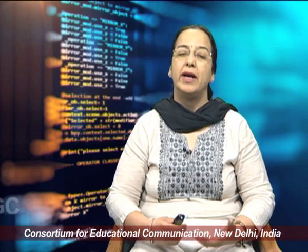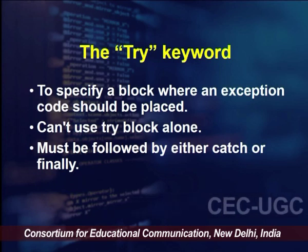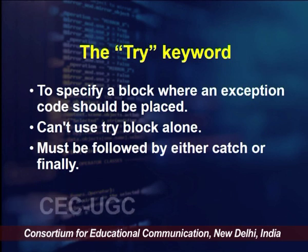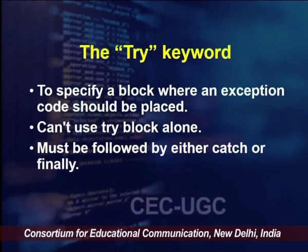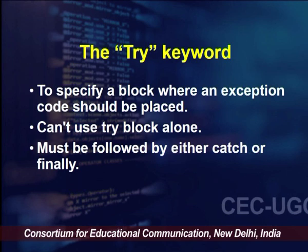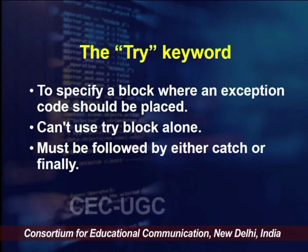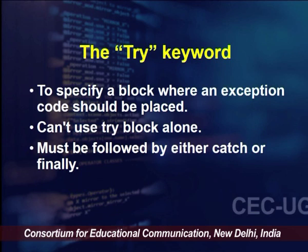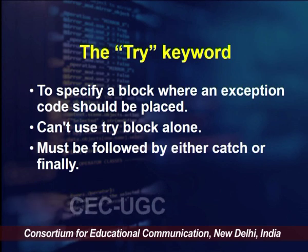In this lecture, we will look at brief details of all five keywords, and then in subsequent slides and lectures we will look into details of each keyword and programs related to that. Let us begin with the try keyword. The try keyword is used to specify a block where we place the code that is suspected of throwing an exception. Try is a block where exception-prone code should be placed. However, try cannot be used alone — it must be followed by either a catch or a finally block.